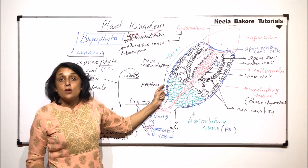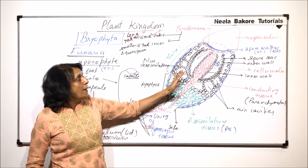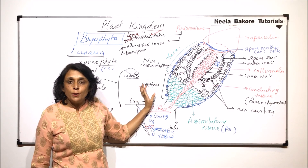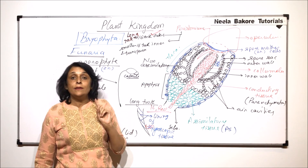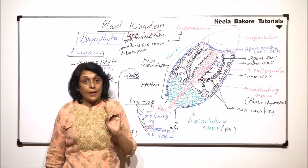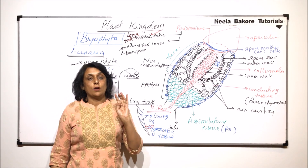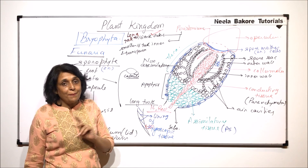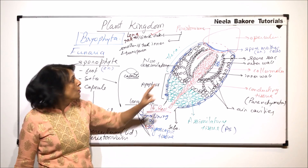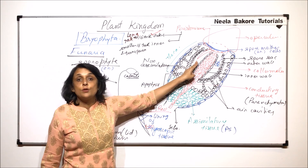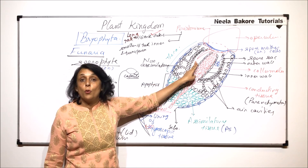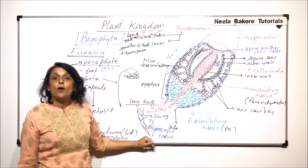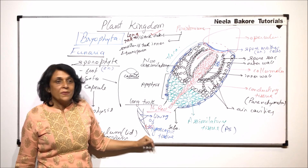It is a complex structure but the mechanism is very simple. One reason bryophytes need water is for male gametes to swim to the female gametes, and the second reason is for this dispersal of spores — because of this hygroscopic tissue.